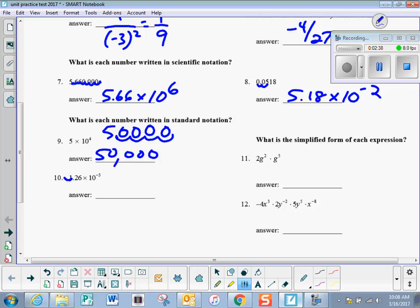On this one, I'm going to move it 1, 2, 3 to the left, and I'm going to get 0.00126. Okay, those are hopefully gimme's for you.